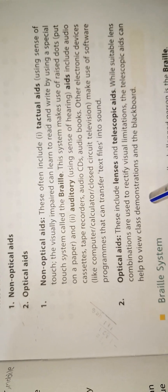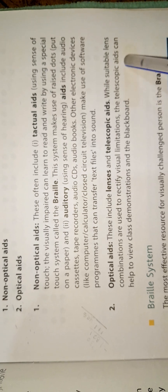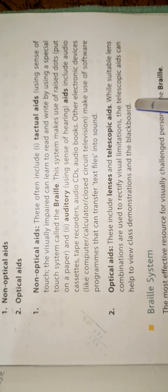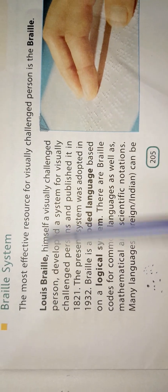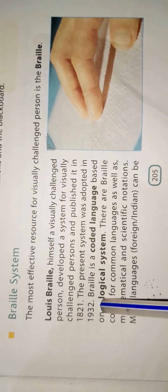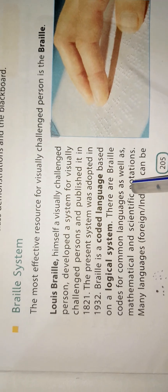Optical aids include lenses and telescopic aids. Suitable lens combinations are used to rectify visual limitations, while telescopic aids can help a person view classroom demonstrations on the blackboard. The most effective resource for visually challenged persons is the Braille system. A scientist named Louis Braille, himself a visually challenged person, developed this system and published it in 1821. The present system was adopted in 1932.